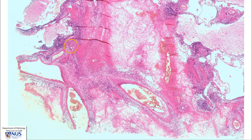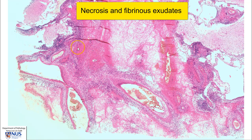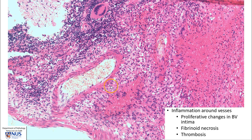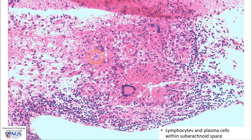Here is a higher magnification view. We can see over here an area of necrosis within a large granuloma. Often, the inflammation will be very closely associated with the leptomeningeal vessels. Here we can see a blood vessel, and there is a necrotizing granuloma comprising these epithelioid histiocytes and areas of necrosis. This can also give rise to proliferative changes in the blood vessel intima, fibrinoid necrosis, and thrombosis. Here is another necrotizing granuloma with a Langhans giant cell, and also accompanying lymphocytes and plasma cells.